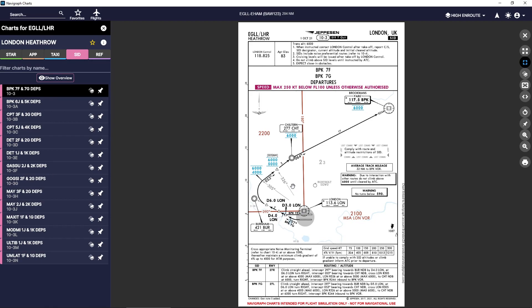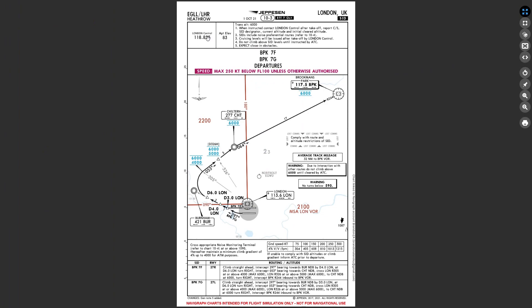Let's go through this chart and what it shows us. Starting at the very top, you can see we have the ICAO code and the IATA code for the departure airport, the date this chart is valid, the date the chart is effective from, and where the chart is for. Here we have some information at the top that shows the area control frequency, the airport elevation, the transition altitude, and some instructions.